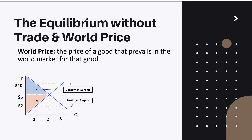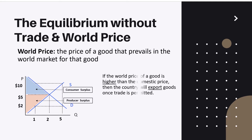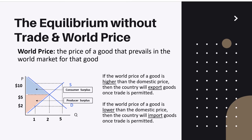The world price is the price of a good that prevails in the world market for that good. Now let's think what will happen if this market in equilibrium will engage in international trade. Let's observe two scenarios. The first: if the world price of a good is higher than the domestic price, then the country will export goods once trade is permitted. The second scenario: if the world price of a good is lower than the domestic price, then the country will import goods once trade is permitted.